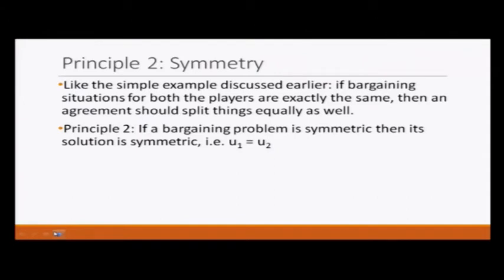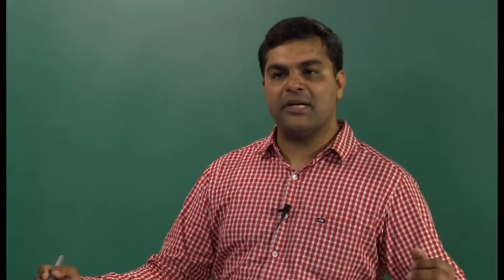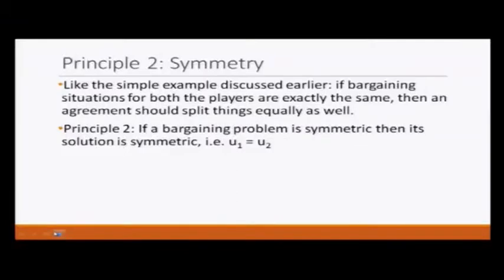The second principle: if the bargaining situation for both players is exactly the same, then the agreement should split things equally. Like in the earlier example of dividing one unit between two players — we are talking in terms of utility outcome — if the problem is symmetric, then the solution should also be the symmetric one.